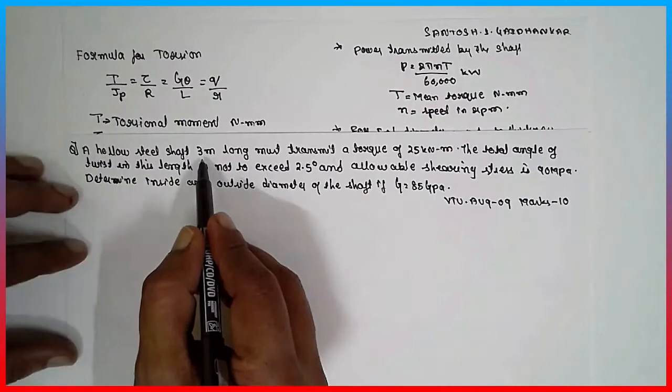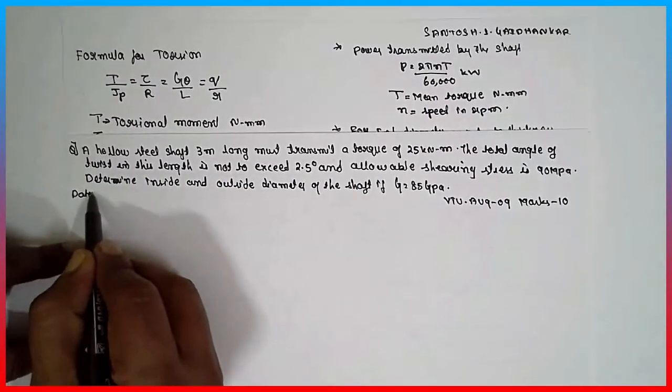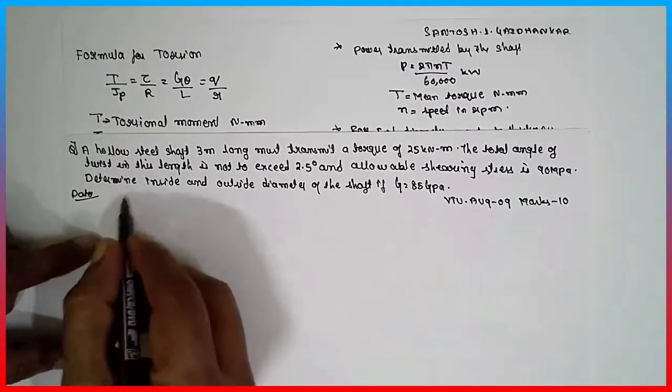A hollow steel shaft—it is a hollow part. That means internal diameter and external diameter comes in picture here, hollow.